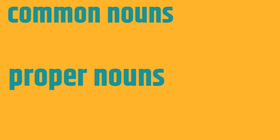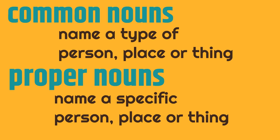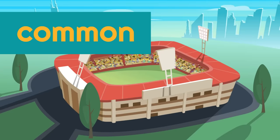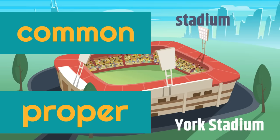Remember, common nouns name a type of person, place, or thing. Proper nouns name a specific person, place, or thing. Let's look at this example. This is called a stadium. The common noun for this is stadium. But let's say the specific name of the stadium is York Stadium. York Stadium would be the proper noun — it's the specific person, place, or thing. The common noun is stadium, it's the type of thing that this is. York Stadium is the proper noun because it's the specific thing that this is.